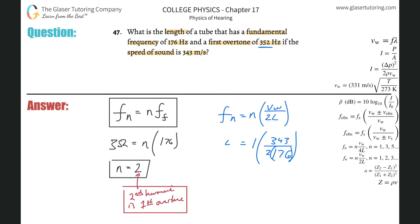So 343 divided by 2 times 176. And I put in 276, so hold on, that's what happens when you rush. Do as I say, not what as I do. So this is 0.974, and that's going to be in terms of meters.